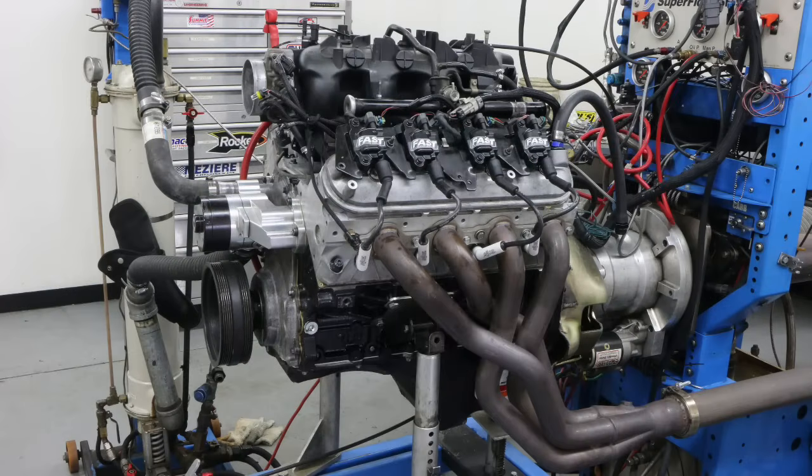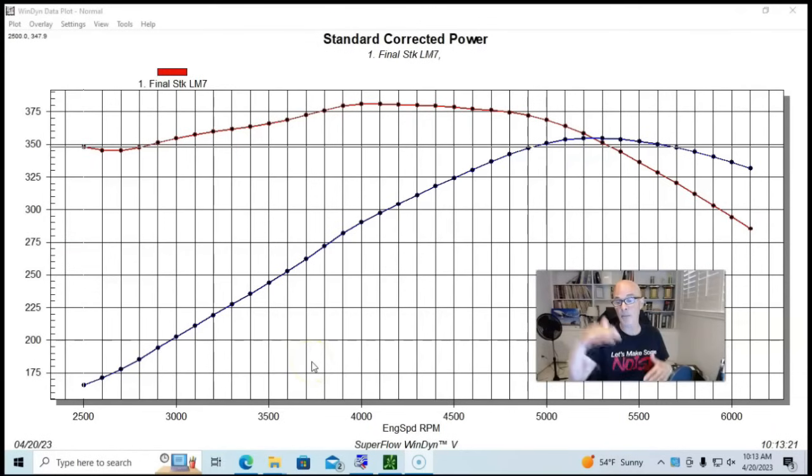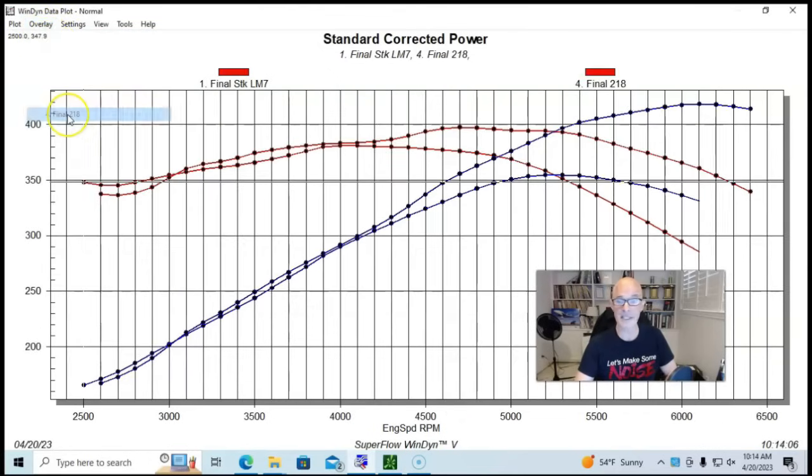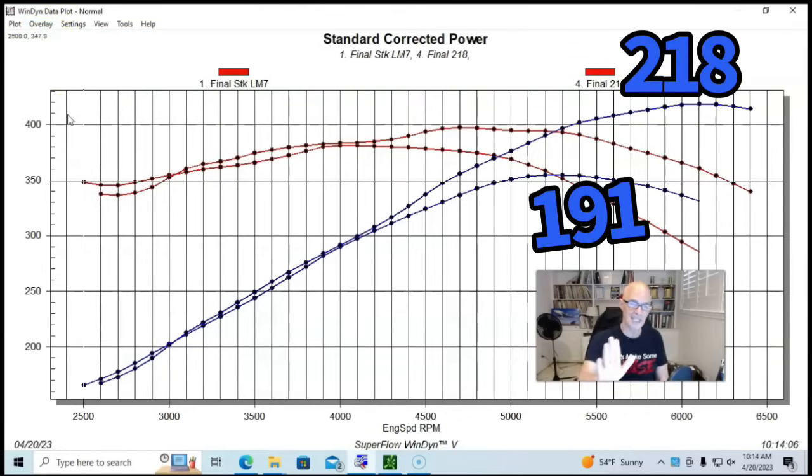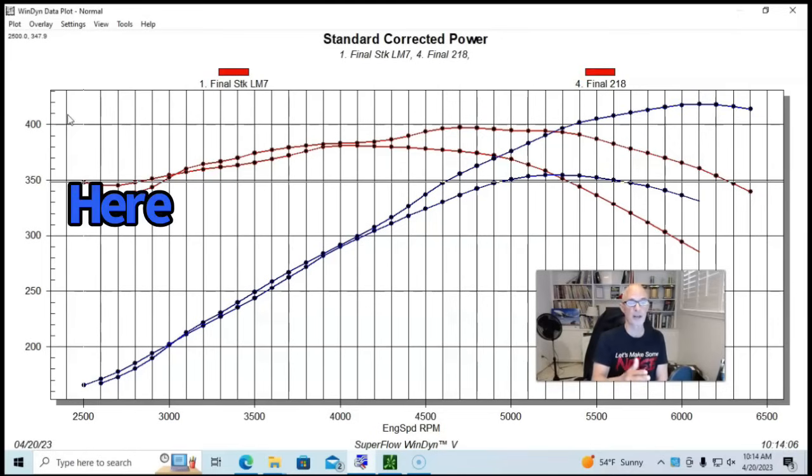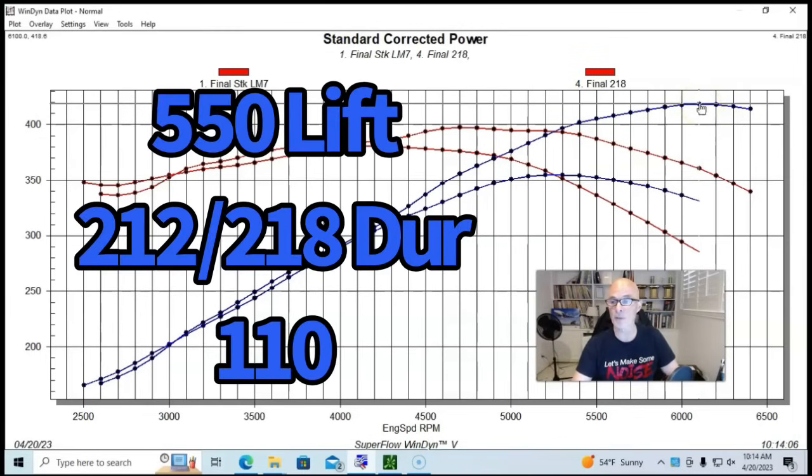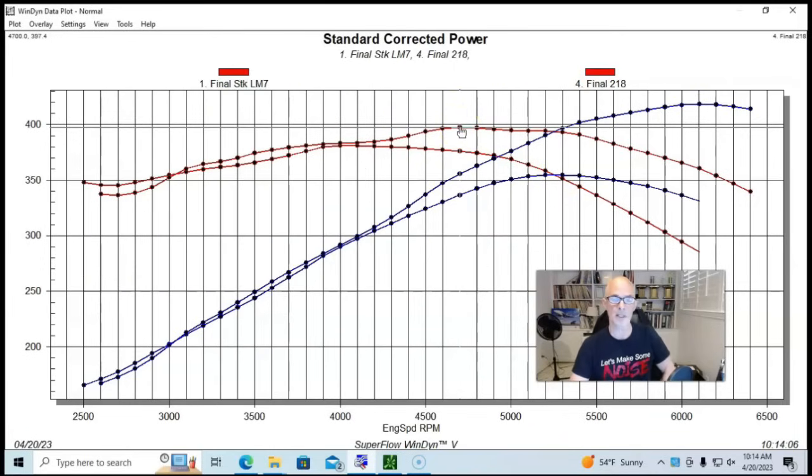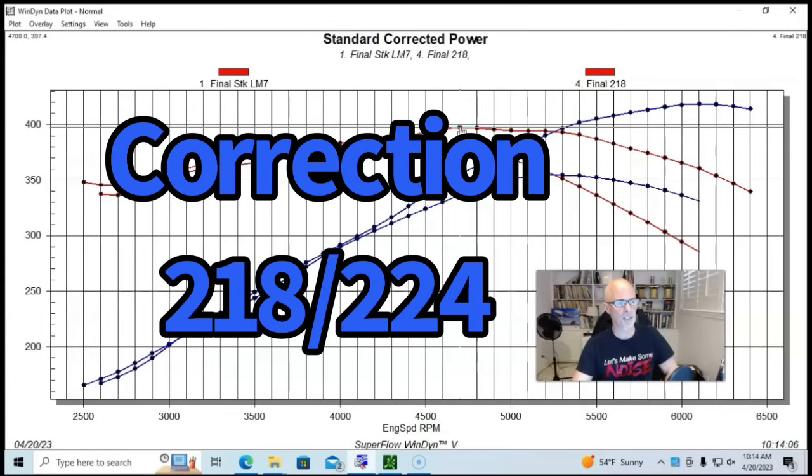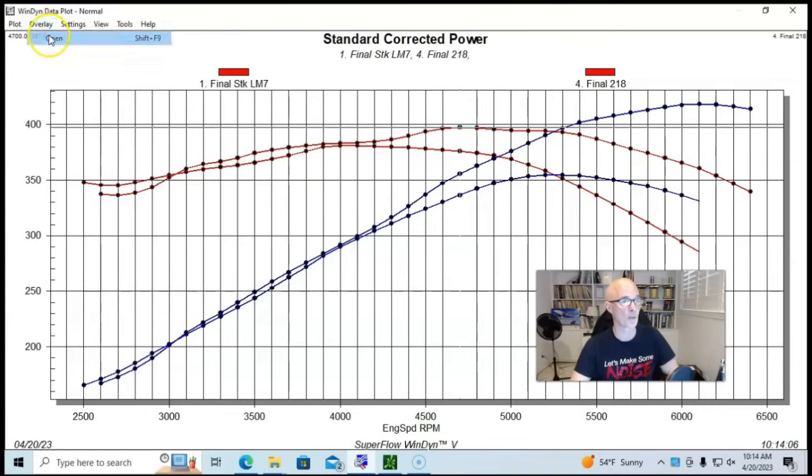We've taken a look at cams ranging from our stock 5.3 cam up to about 212-218. Now we're going to step up even further. Once again, we're starting out with our stock LM7 camshaft, and this is a 218 camshaft. You can see not very much. It lost power up to about 3,000, not big gains up to about 4,000, and then started coming into its own. So peak power on the 218, I'll put the specs up as always, 419 horsepower versus 354. Peak torque was up a bit too, 397 foot-pounds.